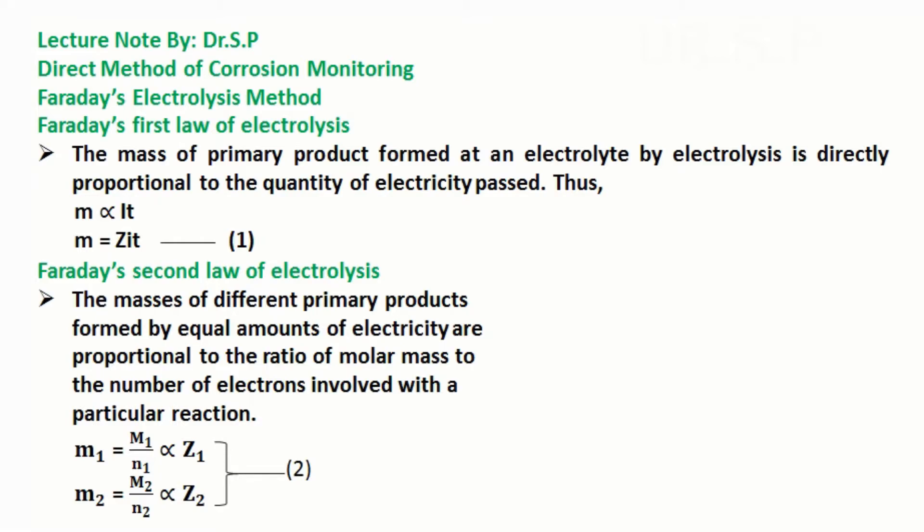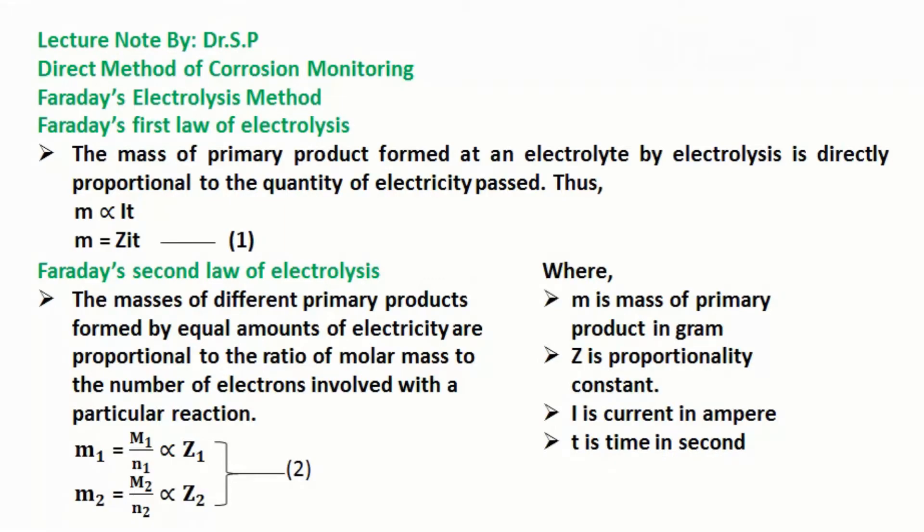Faraday's first law of electrolysis states that the mass of primary product formed at an electrolyte by electrolysis is directly proportional to the quantity of electricity passed. Thus, M is directly proportional to IT. M equals ZIT, where M is mass of primary product in grams, Z is proportionality constant, I is current in amperes, and T is time in seconds.